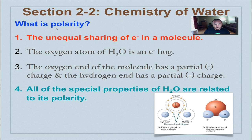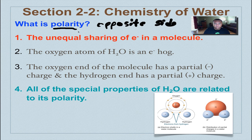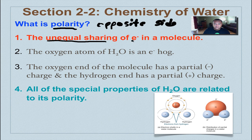All of the neat features of water occur because of polarity. Polarity is a word that simply means opposite sides. Some people think that it means cold, like polar bear, but no, it just means opposite sides — like a north pole and south pole on our planet, or like on a battery. This happens because there's unequal sharing of electrons within the molecule.